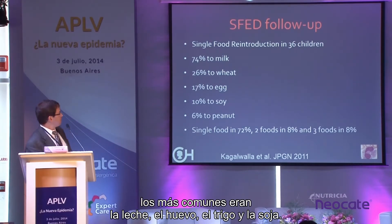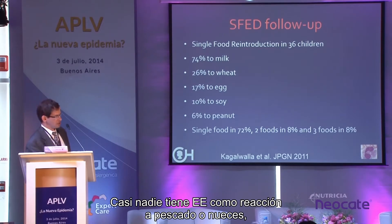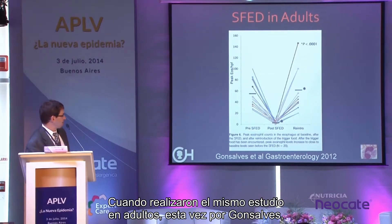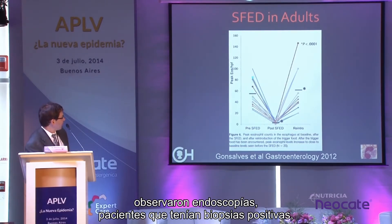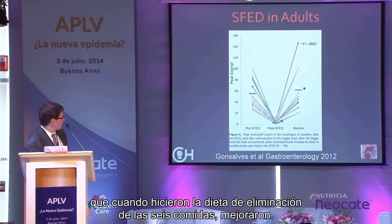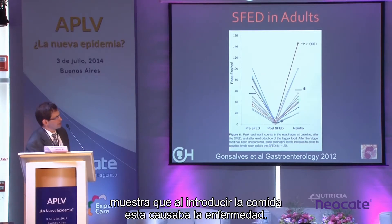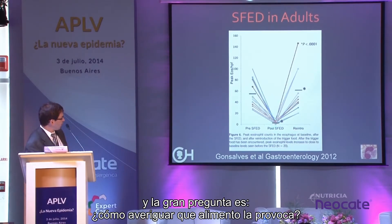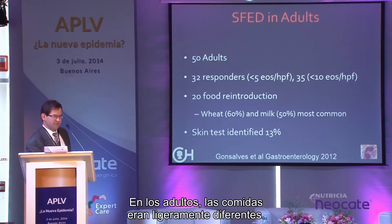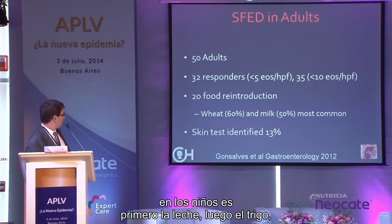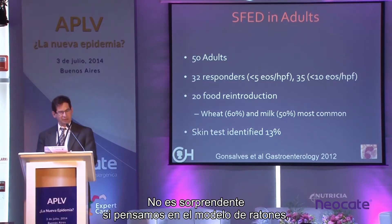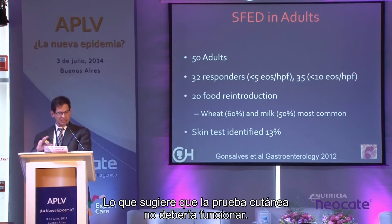When foods are reintroduced after the six-food elimination diet, the most common culprits are milk, wheat, egg, and soy. Almost no one in the United States has EOE triggered by fish or nuts. A parallel study in adults by Emi Gonzalez confirmed that removing foods leads to remission and reintroducing them causes recurrence — fulfilling Koch's postulates, demonstrating that foods cause EOE. In adults the order was slightly different — wheat first, then milk — and notably, regular skin testing didn't identify causative foods, consistent with the mouse data showing IgE is not required.